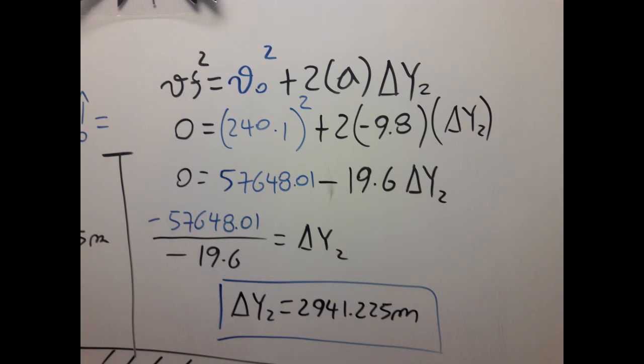Now that I know the initial velocity for stage 1, I am going to use this kinematic equation to calculate how far it's going to be when the final velocity in the y direction is 0. So as you can see, I plug in 0 for final velocity of stage 2. My initial velocity is going to be 240.1 squared. And my acceleration is going to be negative 9.8, that is g.